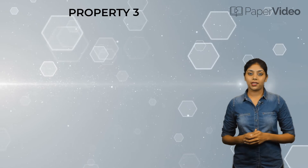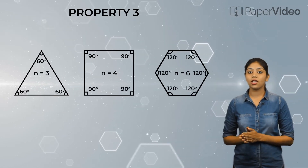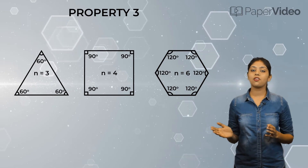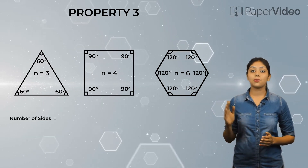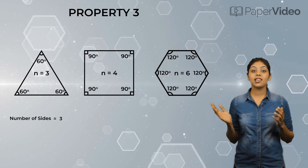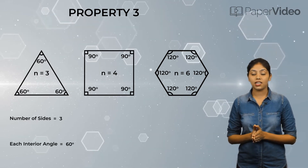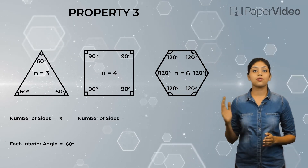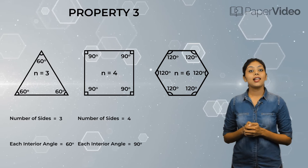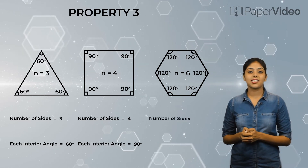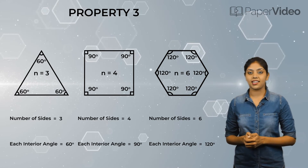According to the third property, the value of each interior angle in a regular polygon increases with the number of its sides. This means that when number of sides equals 3, each interior angle equals 60 degrees. Similarly, when number of sides equals 4, each interior angle equals 90 degrees. Likewise, when number of sides equals 6, each interior angle equals 120 degrees.